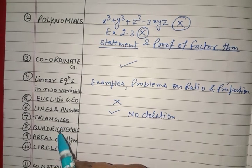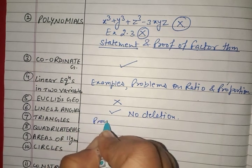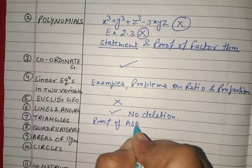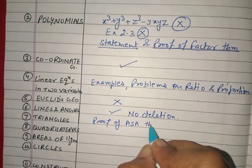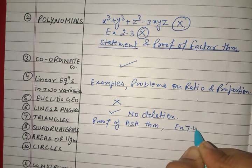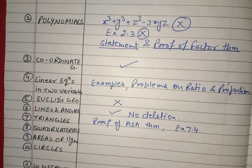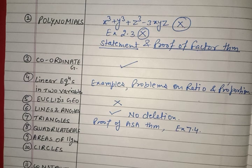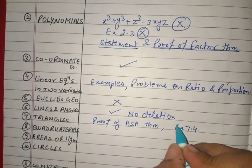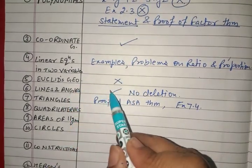The next chapter is Triangles. In this chapter, you do not need to do the proof of the ASA theorem, and Exercise 7.4 is deleted. The topic deleted is triangle inequalities and the relation between angle and facing side — inequalities in triangles — so Exercise 7.4 is not in the syllabus.